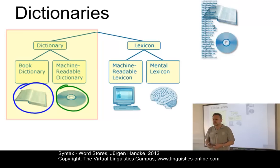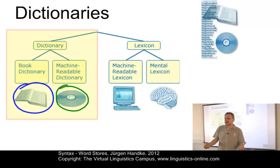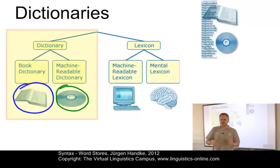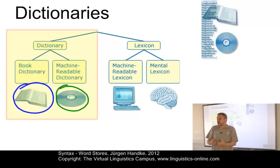Dictionaries which are delivered either on external disks, such as CD-ROM or DVD, or more commonly today, on the web. The most common types of book dictionaries are encyclopedic monolingual dictionaries, bilingual dictionaries, or dictionaries for special purposes, such as dictionaries that represent synonyms. Machine-readable dictionaries are similar concerning their content; however, they are delivered externally on specific storage devices, such as CD-ROMs, or in the cloud of the World Wide Web.